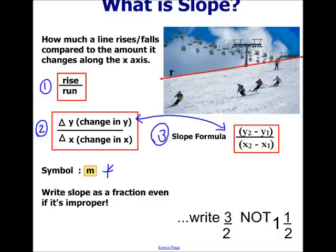The symbol is m. And key element here, and this is in your notes, to write slope as a fraction, even if it is improper. Do not reduce this. It's going to make your life miserable when you're trying to figure out how to graph a line if you make it one and a half. Three halves is preferable.